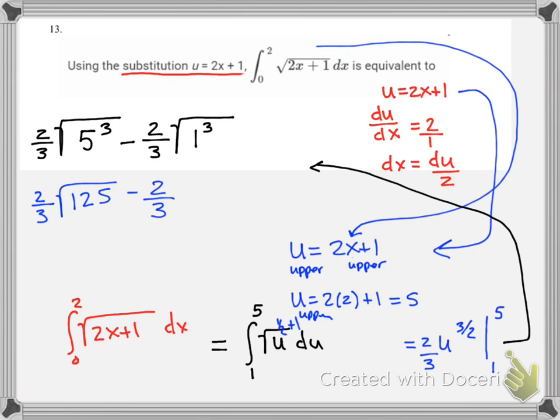Let's see if this simplifies at all. The square root of 125, well this is 5 times 25, so we could say we could take the square root of 25 and get 5, so we'll have 2 times 5 over 3, times the square root of 5, minus 2 thirds.